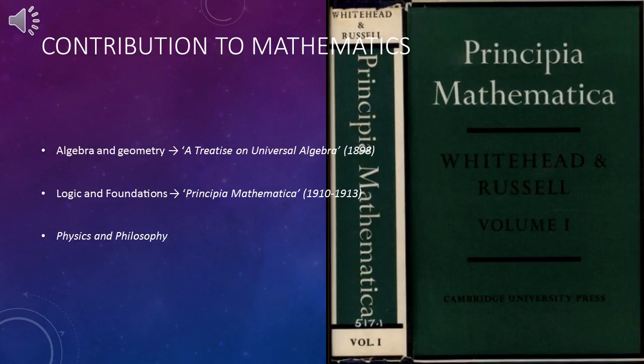This led Whitehead to his third area of physics and philosophy. Mathematical logic, logical properties of cardinal numbers, series, functions, quantity, and vector families were all topics explored within his text that represented a major leap forward in modern logic.